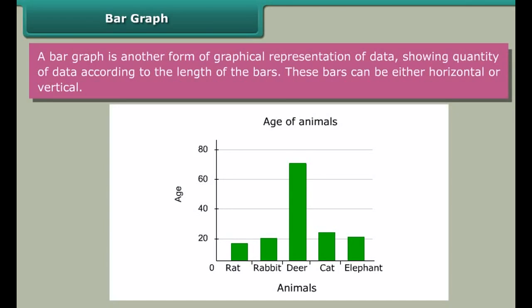Bar graph: A bar graph is another form of graphical representation of data showing quantity of data according to the length of the bars. These bars can be either horizontal or vertical. This bar graph represents ages of different animals. From this bar graph we can get the age of animals.